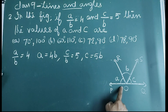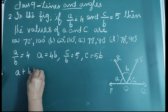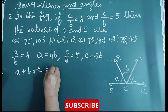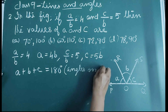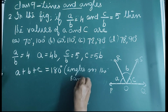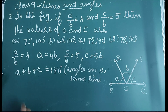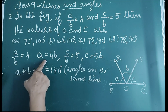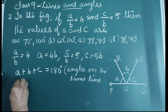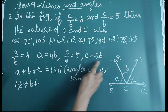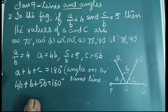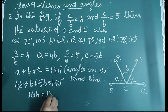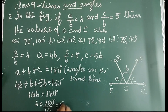From the figure, angle A + angle B + angle C = 180° because they are angles on the same straight line. Substituting, 4B + B + 5B = 180°, that is 10B = 180°. Therefore, B = 180° ÷ 10 = 18°.